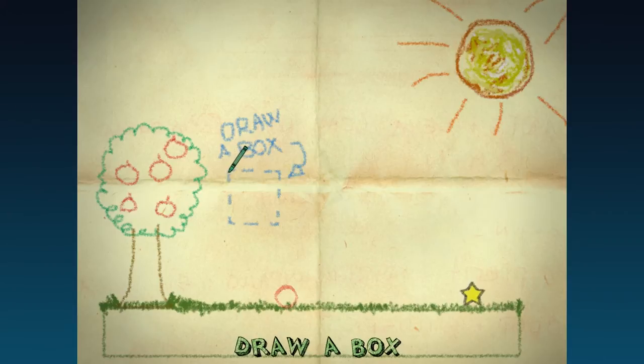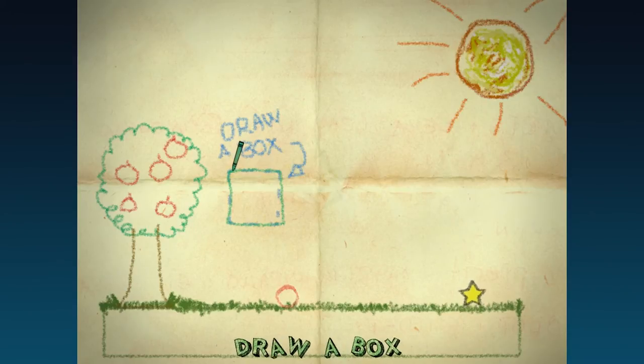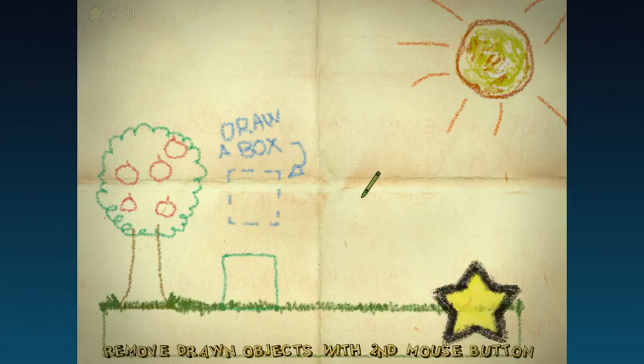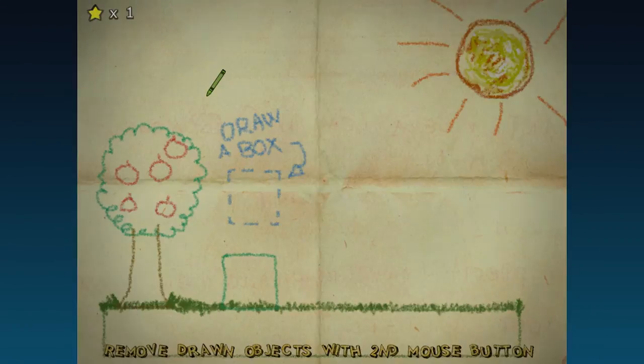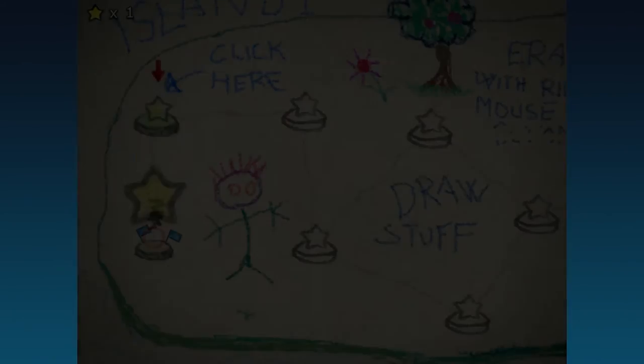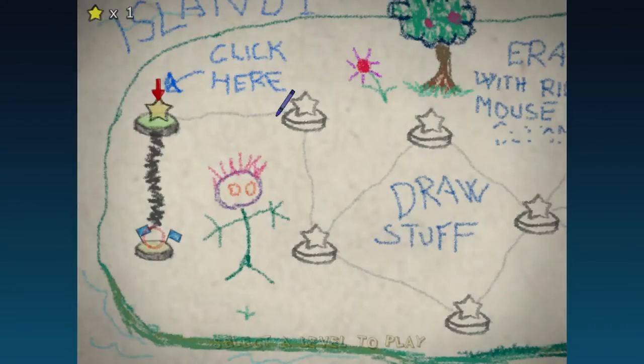But anyway, we're going to start off the game by just drawing a simple green box, and I'm going to change my crayon color after this because green doesn't stand out very much. But the green box bumps the red ball into the star, and we pass the first level.